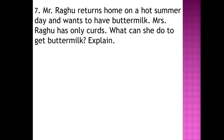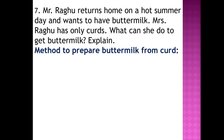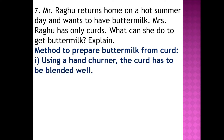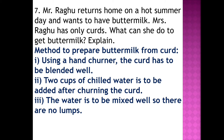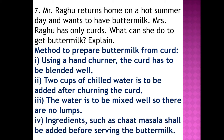Seventh question: Mr. Ragu returns home on a hot summer day and wants buttermilk, but Mrs. Ragu has only curds. What can she do? Method: using a hand churner, blend the curd well. Add two cups of chilled water after churning. Mix well so there are no lumps. Add ingredients such as chaat masala before serving the buttermilk. This uses the method of churning.